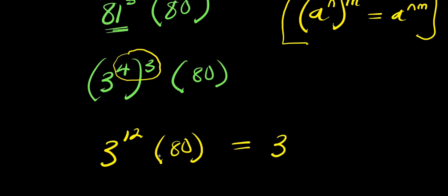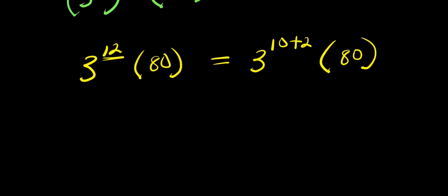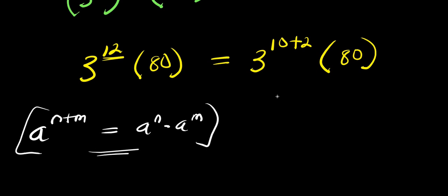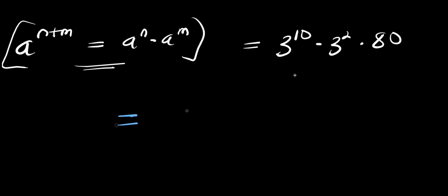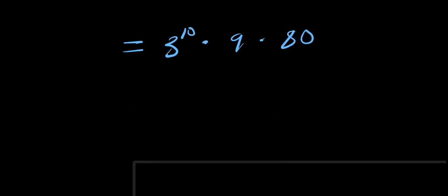I can express 12 as the sum of 10 and 2, so I have 3 to the power of 10 plus 2, times 80. Applying the exponent addition rule, this becomes 3 to the power of 10 times 3 to the power of 2, times 80. So I need to find the value of 3 to the power of 10, then multiply it by 9 — which is 3 squared — then by 80.